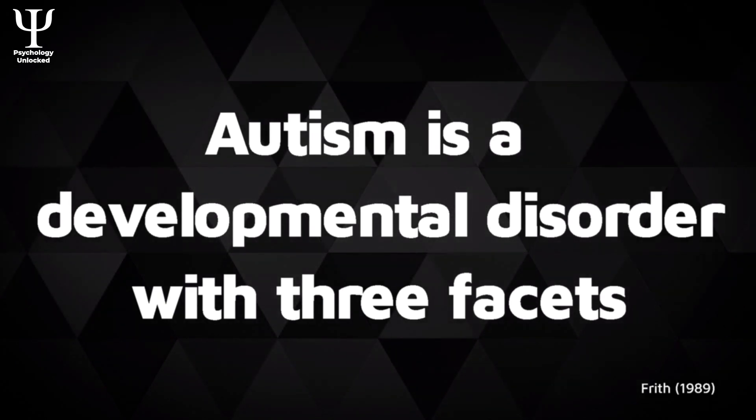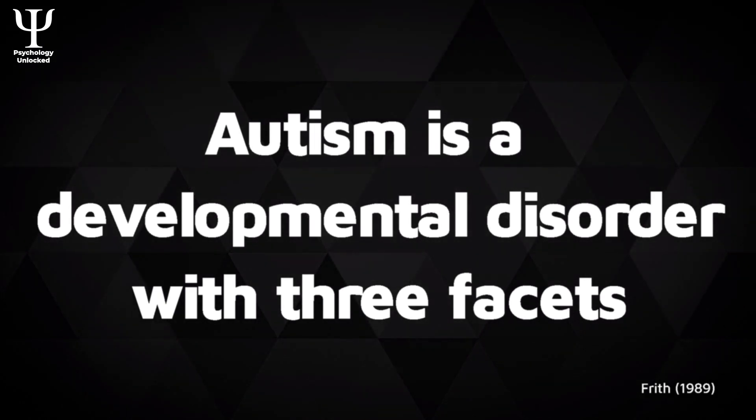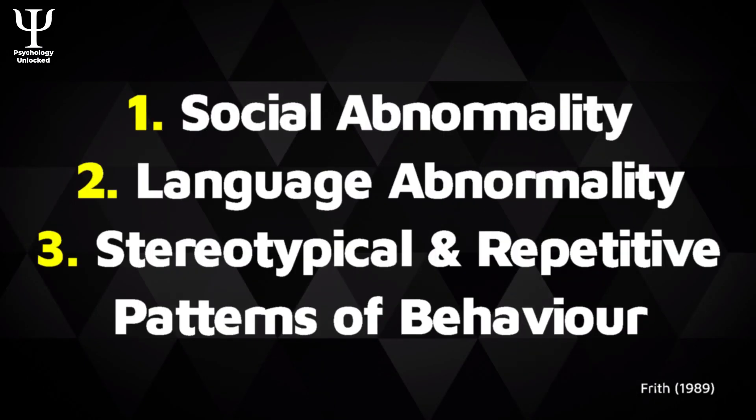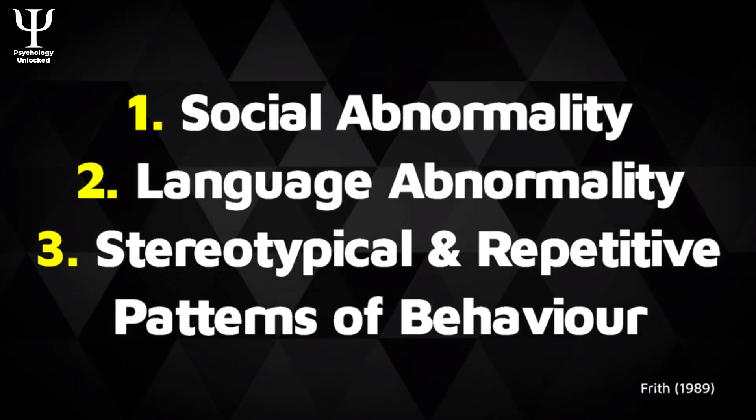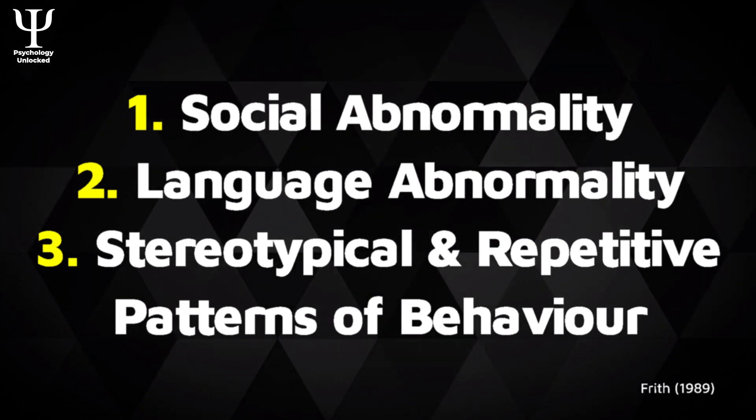Autism is a developmental disorder with three facets: social abnormality, language abnormality, and stereotypical and repetitive patterns of behaviour. As a spectrum disorder, each person with autism will present symptoms to slightly different extents, something that can make it difficult, and probably wrong, to make sweeping statements about autism or autistic people.